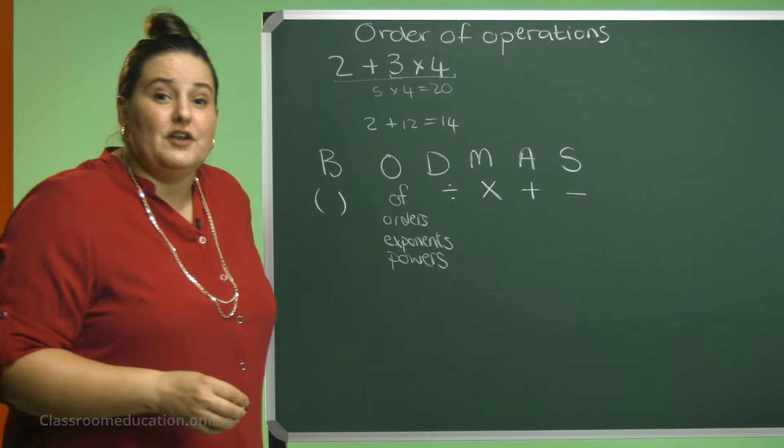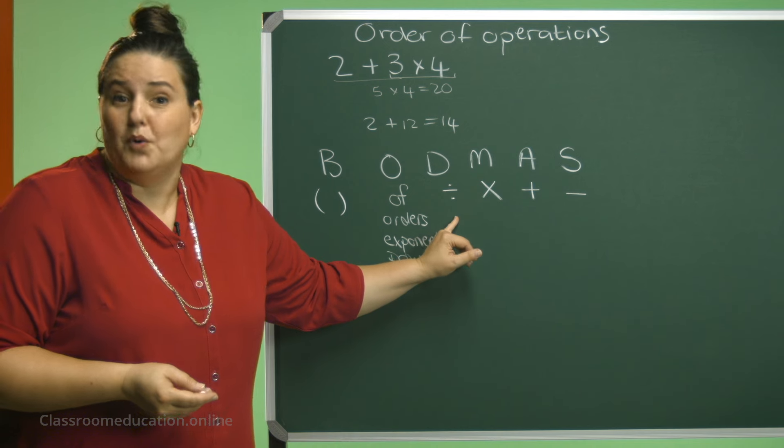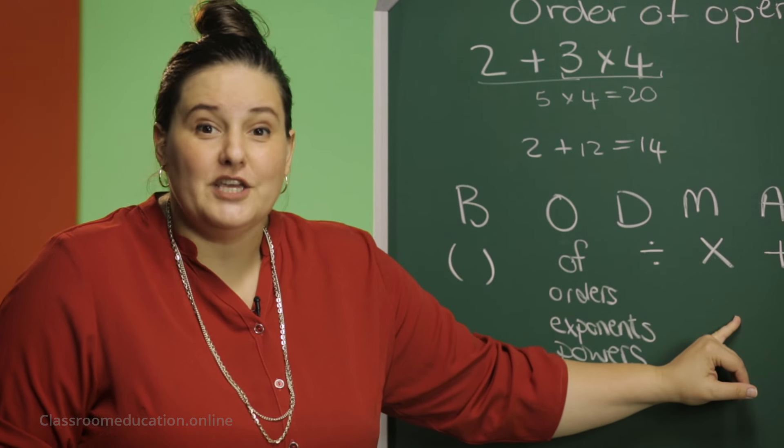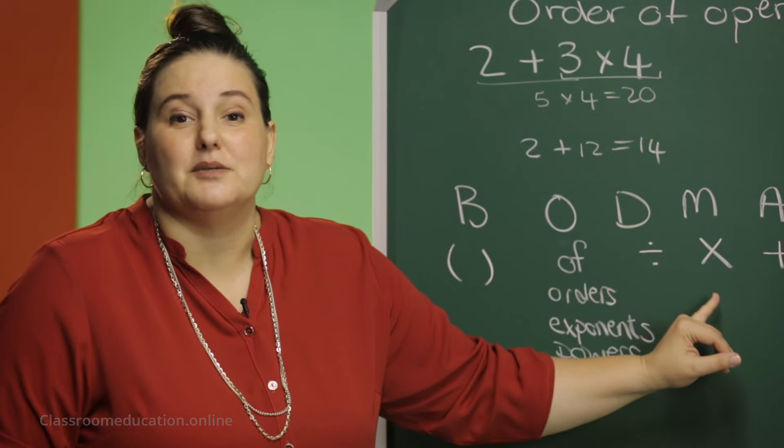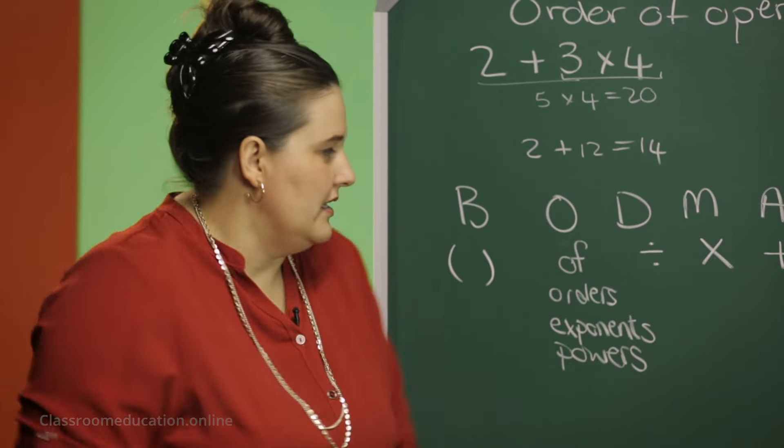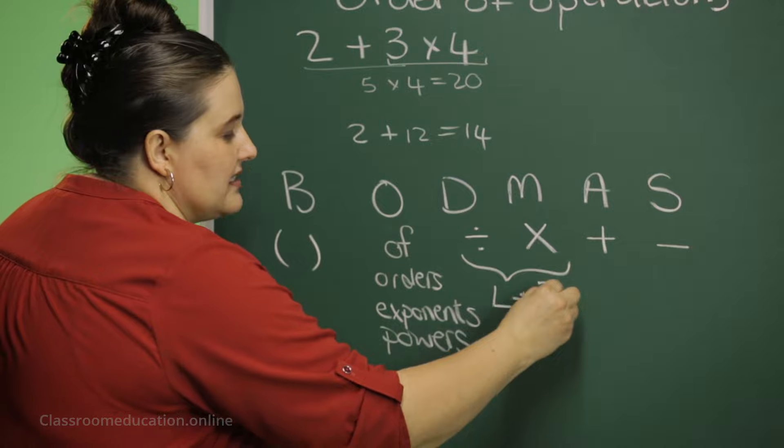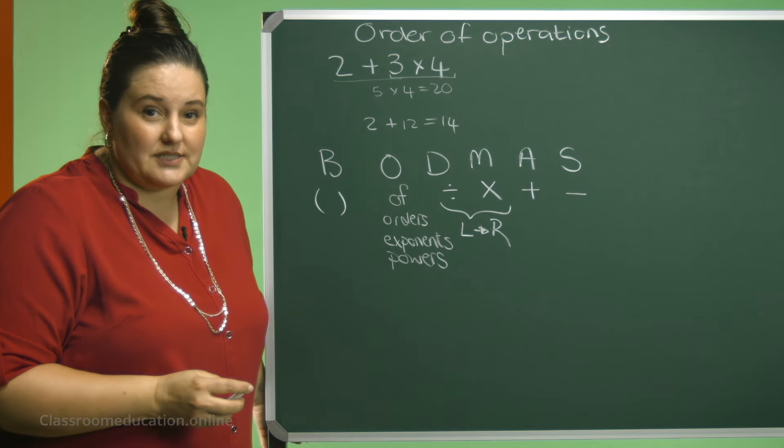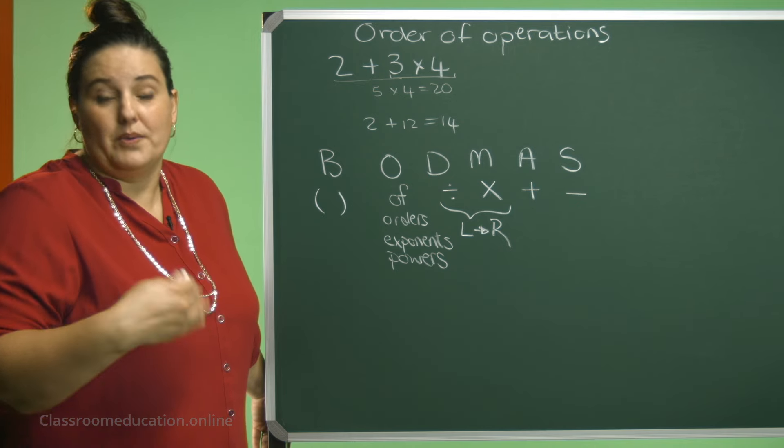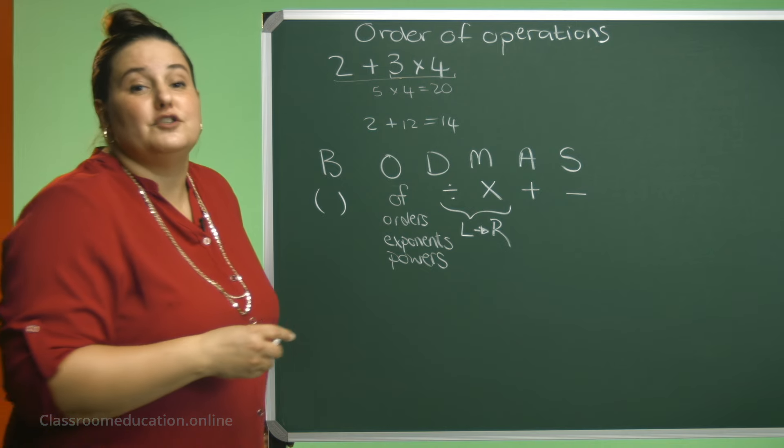Now, if you have a look at these rules, does it mean that division is more important than multiplication? No, we should do the division and multiplication from left to right as they are equal. So we are going to do them from left to right in our calculations. The addition and the subtraction. Does it mean that addition is more important? No, we should also do that from left to right.